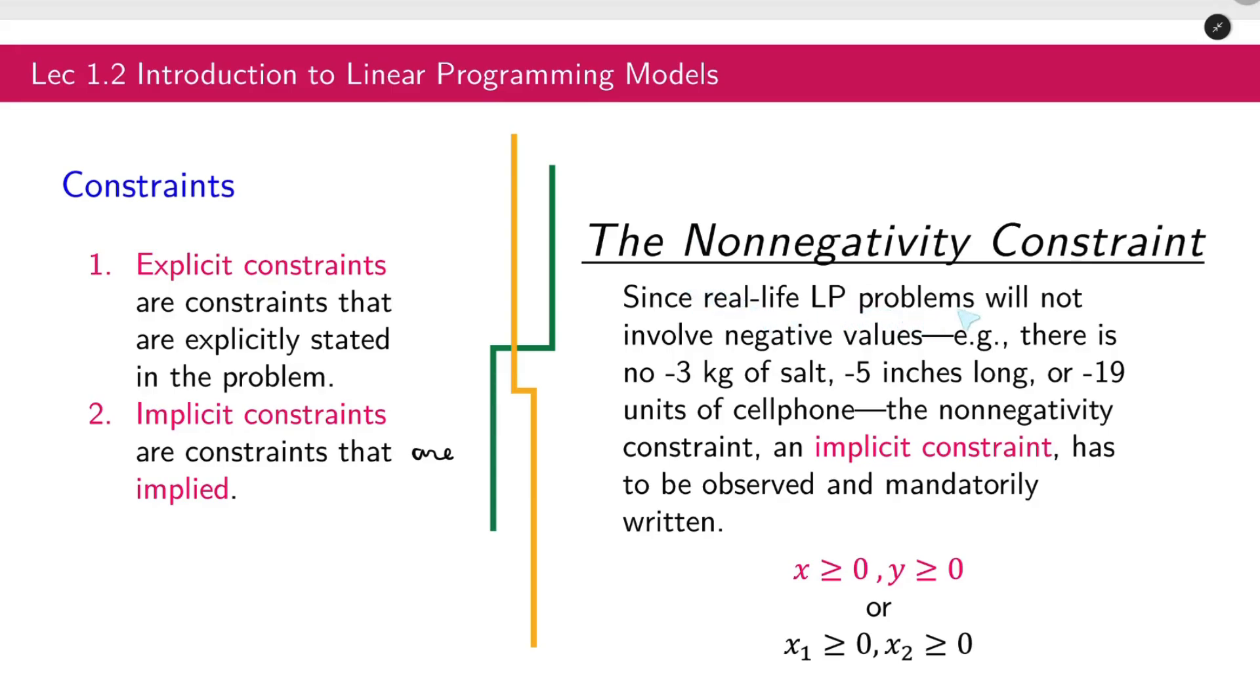Since real-life LP problems will not involve negative values, for example, there is no negative 3 kilograms of salt, negative 5 inches long, or negative 19 units of cell phone. We don't have negative values in real life. It should be positive values only. The non-negativity constraint and implicit constraint has to be observed and mandatorily written.